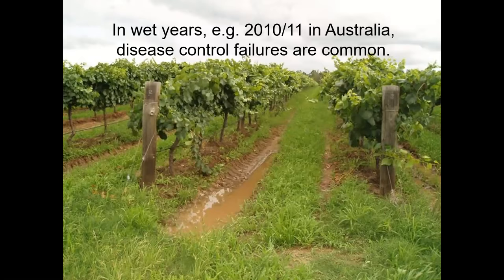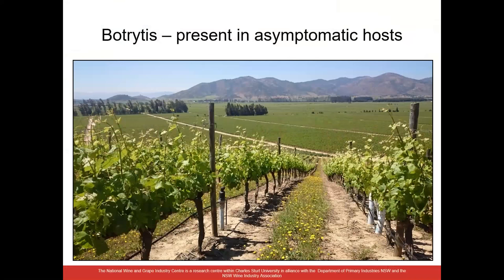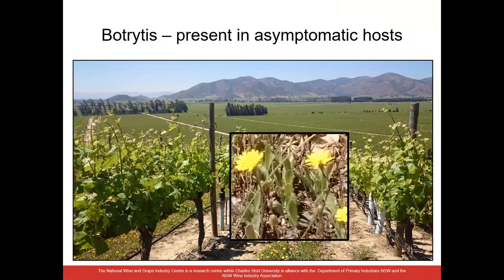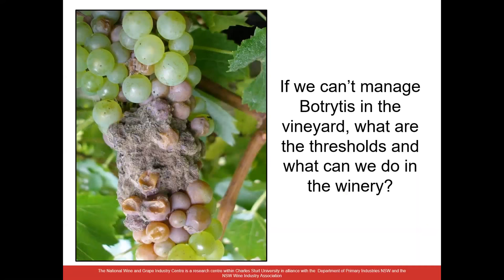We're up against a tough problem. The other thing to add is the ubiquity of Botrytis in the vineyard — it's present on asymptomatic hosts. In a vineyard in South America, we can isolate Botrytis cinerea from ground cover plants in the inter-row space, which also represents an inoculum source. We're never going to get rid of it out of the vineyard. If we have a bad growing season with lots of rain and weather damage to vines, we end up with these kinds of symptoms, as seen here on Chardonnay bunches.